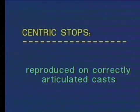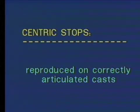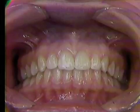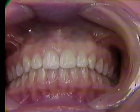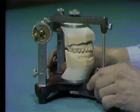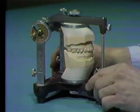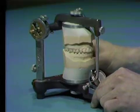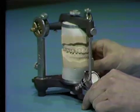Small variations on the articulated casts are acceptable, but substantial differences are indicative of improperly mounted casts. Observation of the patient's tooth contacts in different functional positions is important for evaluating the accuracy of casts mounted on an articulator and to ascertain the best function when doing a diagnostic waxing.